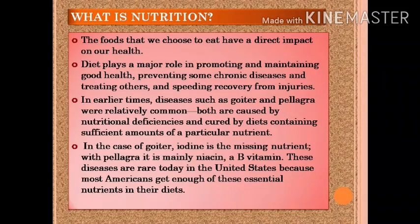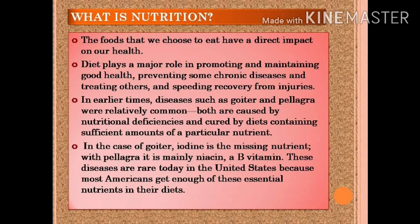The foods that we choose to eat have a direct impact on our health. Diet plays a major role in promoting and maintaining good health, preventing some chronic diseases, treating others, and speeding recovery from injuries. In earlier times, diseases such as goiter and pellagra were relatively common — both are caused by nutritional deficiencies. They are deficiency diseases and can be cured by diets containing sufficient amounts of particular nutrients.